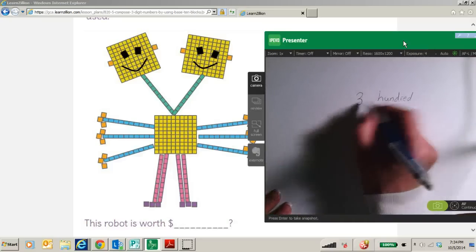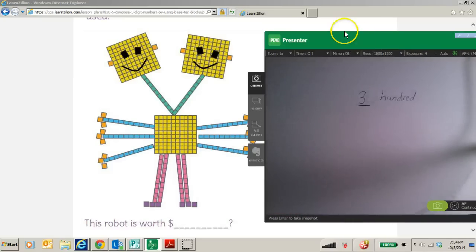And then let's count the 10s. We have 1, 2, 3, 4, 5, 6, 7, 8, 9, 10, 11, 12 tens.